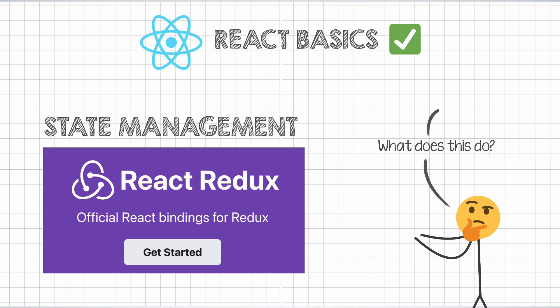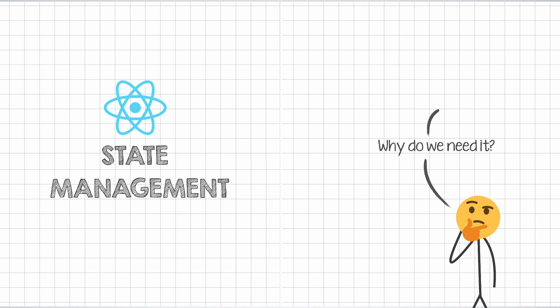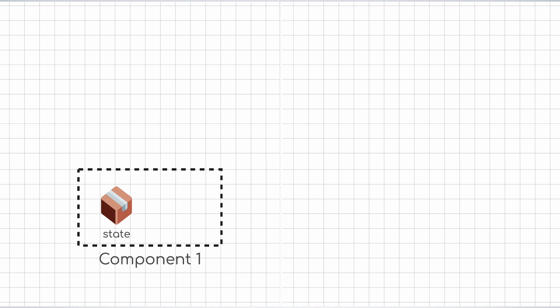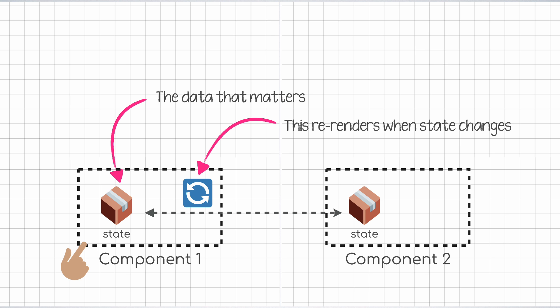But before doing that, let's ask ourselves an important question: why do we need state management in React at all? We saw that whenever we need to re-render a component based on some data, we put it into the component's state. But in all those use cases, the data was supposed to be localized to a single component.